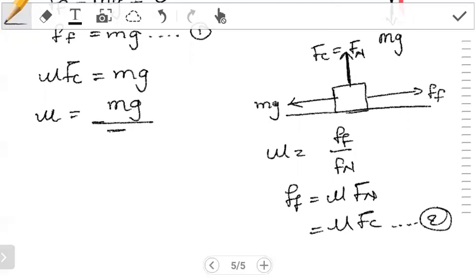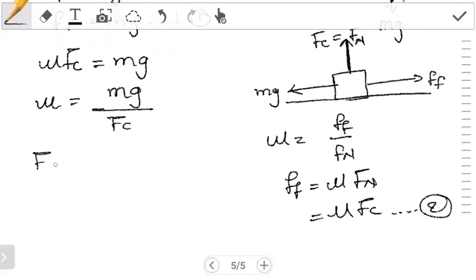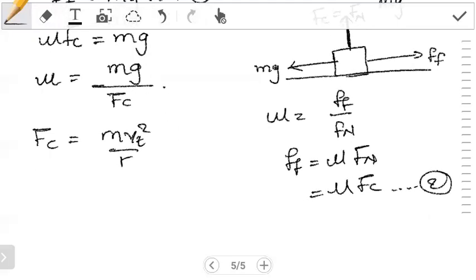Now we want to find mu, so this becomes mu is equal to mg over centripetal force. But we remember our expression for centripetal force, we did look at it, we've been using it so many times, you should know it by now, it is m vt squared over r. So when you substitute it in our equation three, so if we substitute this...